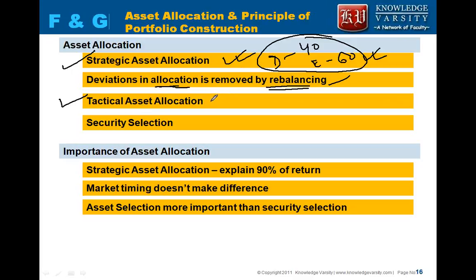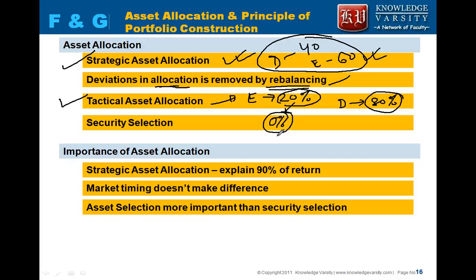For example, if the asset manager thinks the equity market is overvalued, equity can be brought down to as low as 20% — or even 0% — of the total portfolio. Correspondingly, debt can go as high as 80% or even 100% depending on the market situation. Tactical asset allocation considers short-term market expectations.